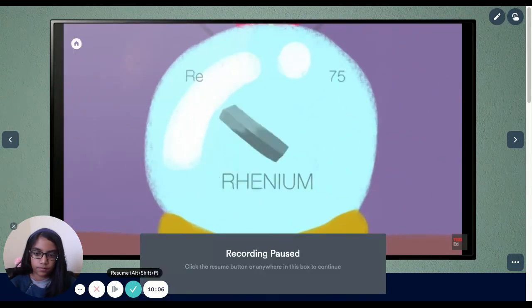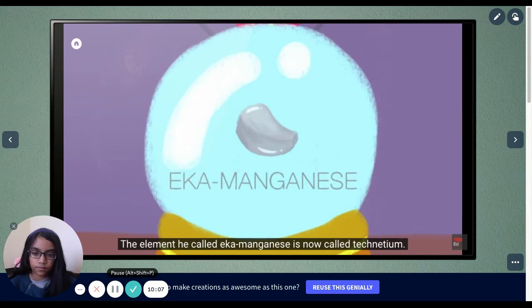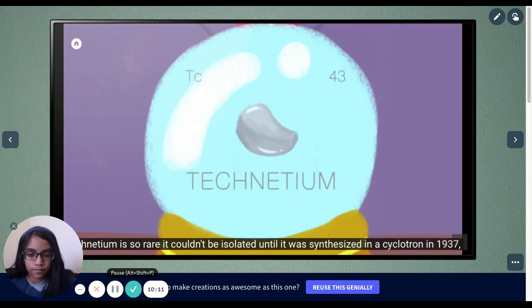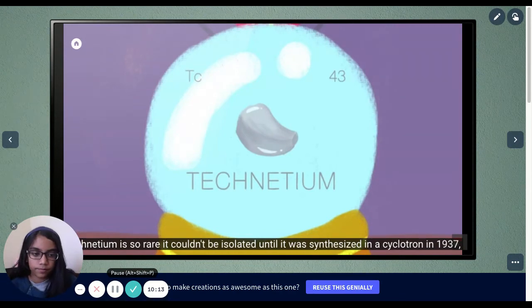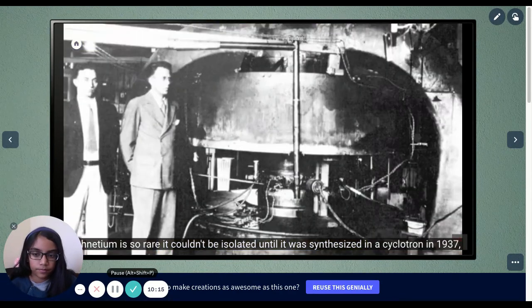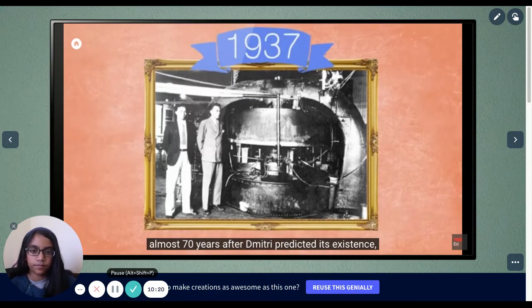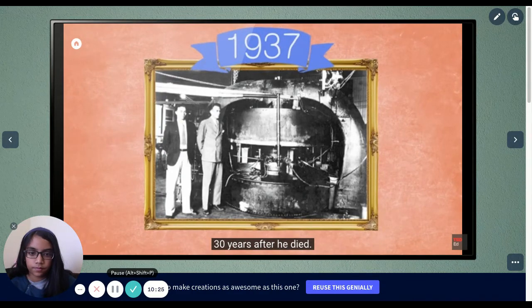Not only did Mendeleev completely nail gallium, he predicted other elements that were unknown at the time. Scandium, germanium. An element he called eka-manganese is now called technetium. Technetium is so rare it couldn't be isolated until it was synthesized in a cyclotron in 1937, almost 70 years after Dimitri predicted its existence, 30 years after he died.